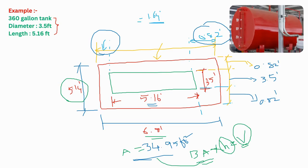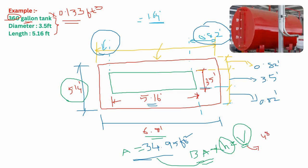Since we already know the capacity of the tank, we can convert these gallons into cubic feet, because we know the area in square feet. So, 360 gallons multiplied by 0.133 — this is the conversion factor to convert gallons into cubic feet. Multiplying 360 gallons by 0.133, we get a volume of 48.125 cubic feet.